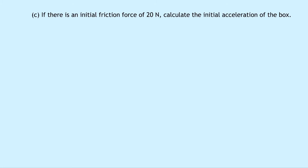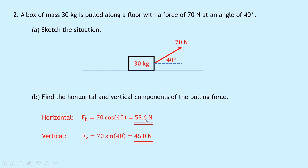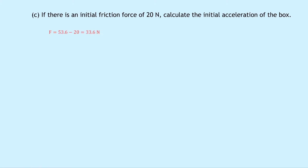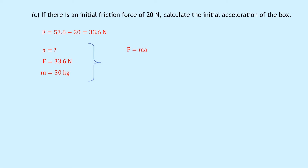For part C, if there is an initial friction force of 20 newtons, calculate the initial acceleration of the box. This is just a classic Newton's second law question. We know the horizontal component of the force is 53.6 newtons, and friction is 20 newtons acting back. So the unbalanced force F equals 53.6 minus 20, which equals 33.6 newtons. Our mass is 30 kilograms. Writing down Newton's second law, F equals MA, rearranging gives A equals F over M. Substituting in: 33.6 divided by 30 equals 1.1 meters per second squared.